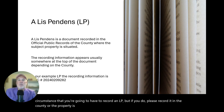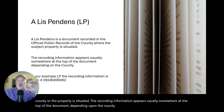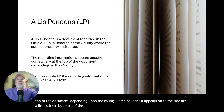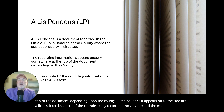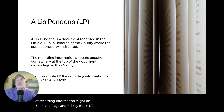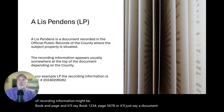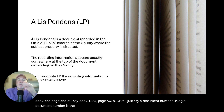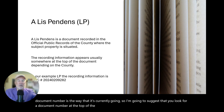The recording information appears usually somewhere at the top of the document, depending upon the county. Some counties it appears off to the side like a little sticker, but most counties record it on the very top. An example of recording information might be book and page, or it'll just say a document number. Using a document number is the way it's currently going, so look for a document number at the top of the document or a little sticker off to the side with all the same information.